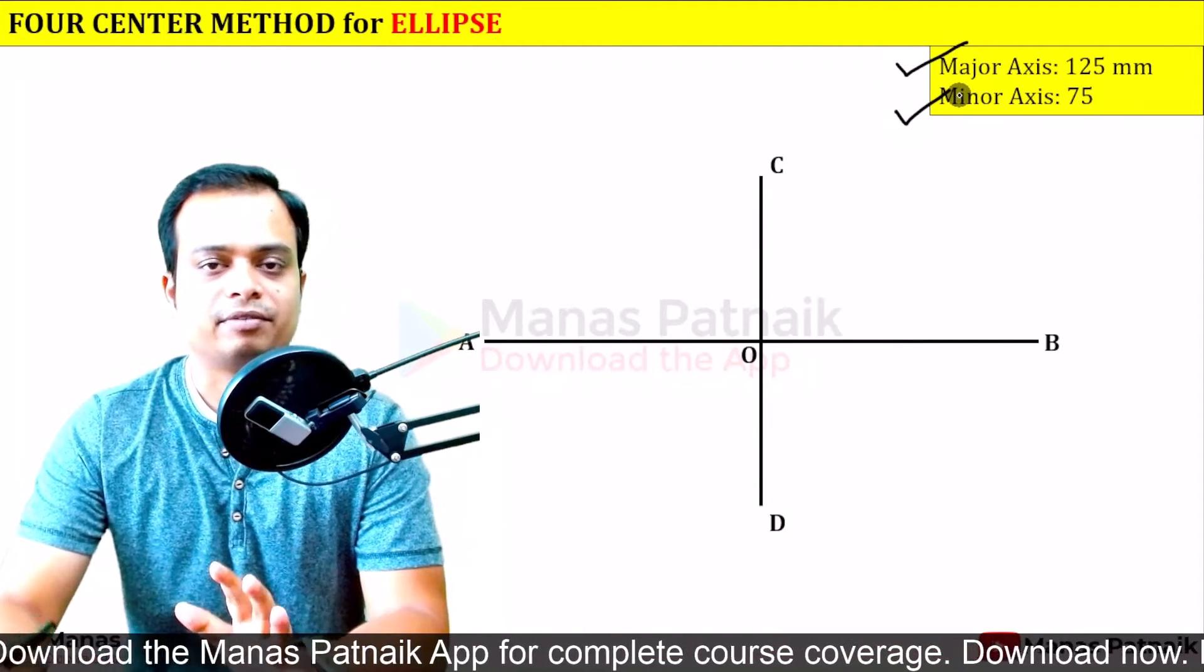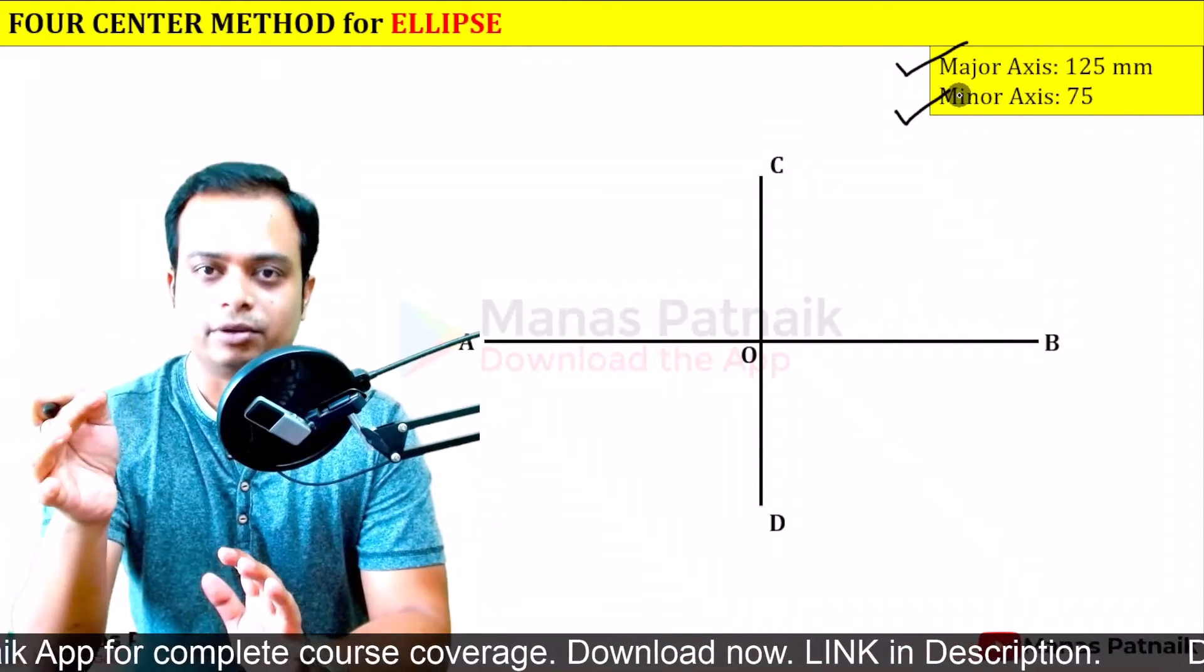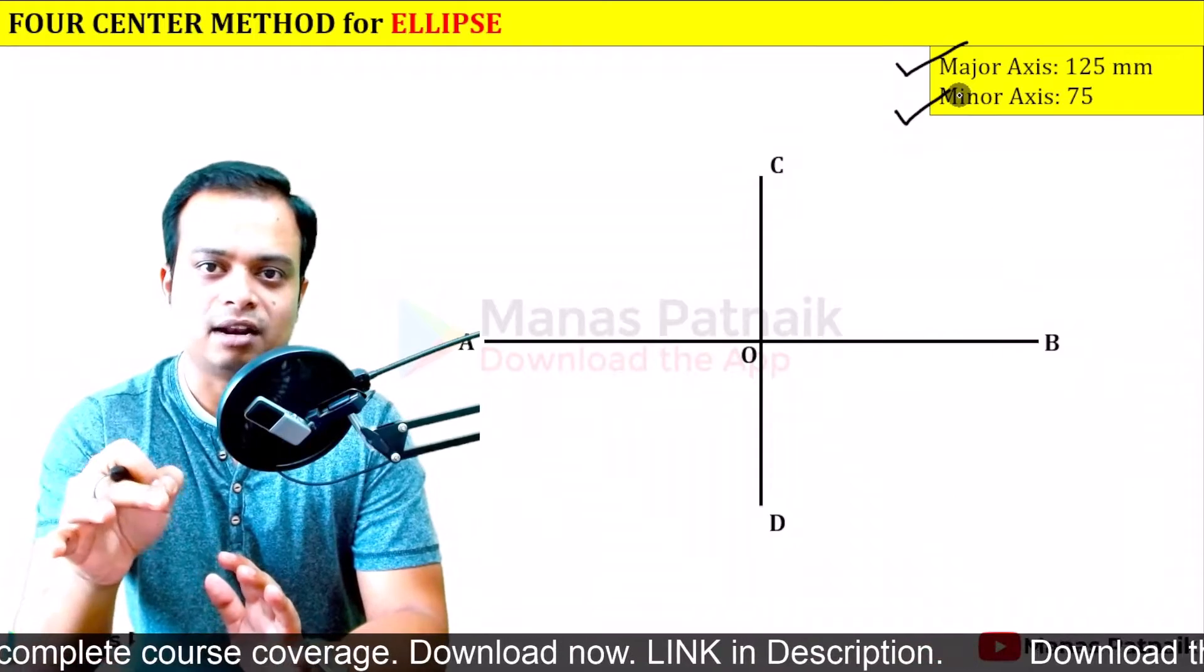So what we are going to do is construct an ellipse with major axis as 125 and minor axis as 75. And by the way, this video is also available in Hindi, the link to which can be found in the description down below.